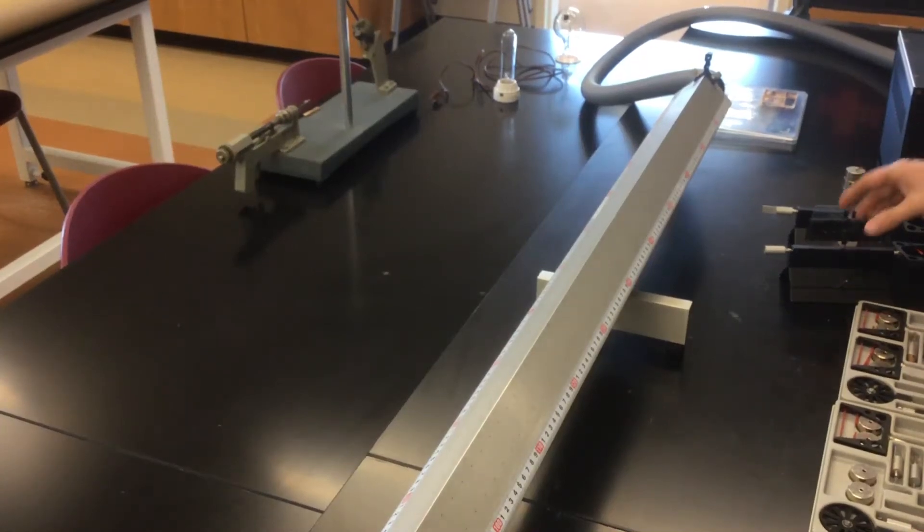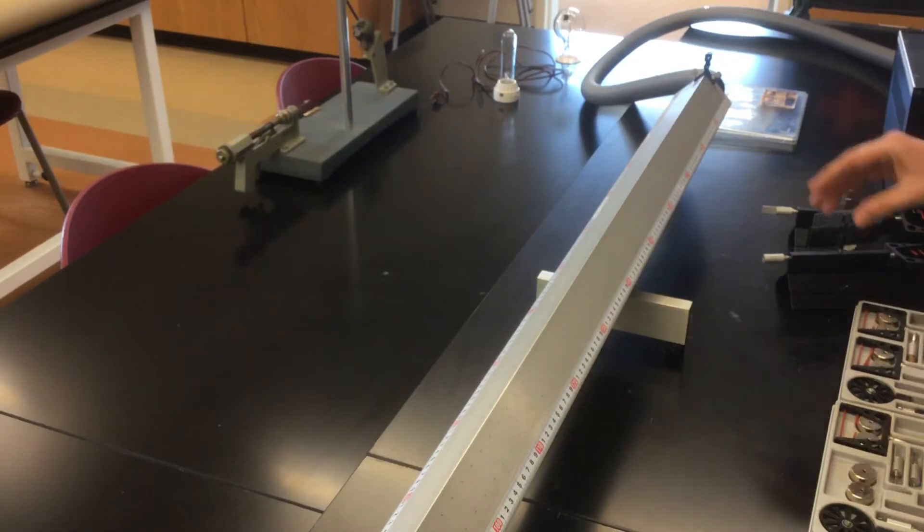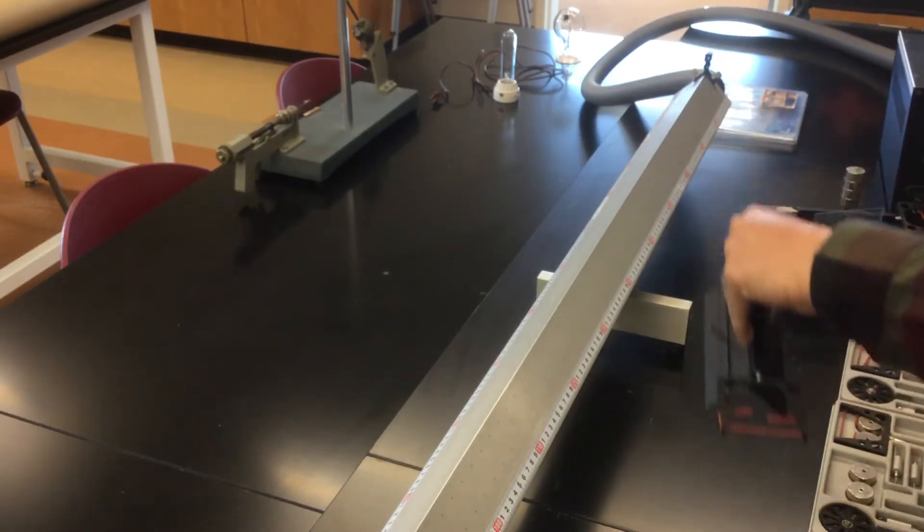Okay, so here's an example of a perfectly inelastic collision, the type in which the two objects collide.